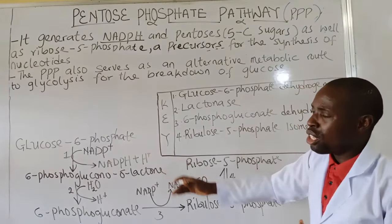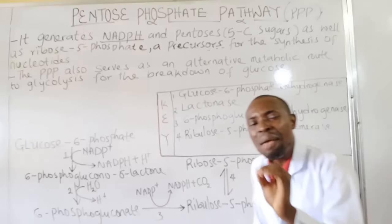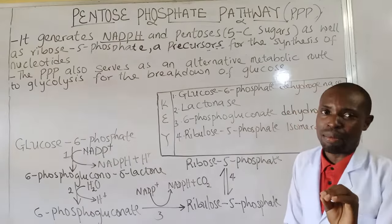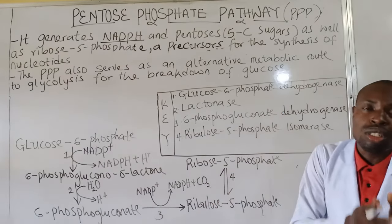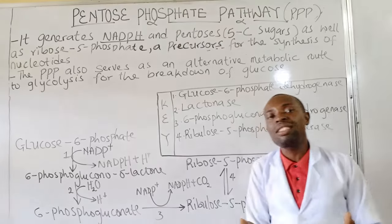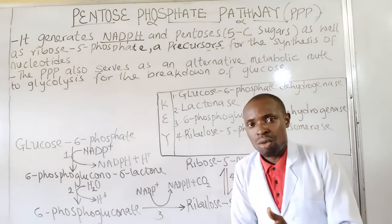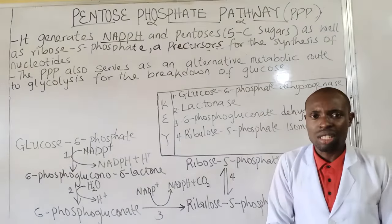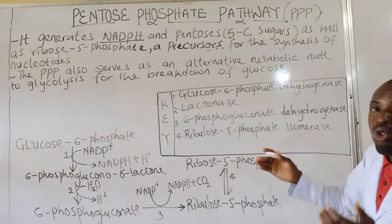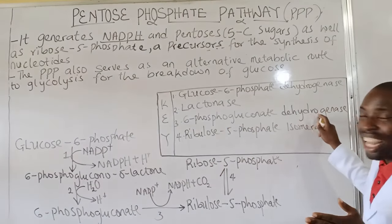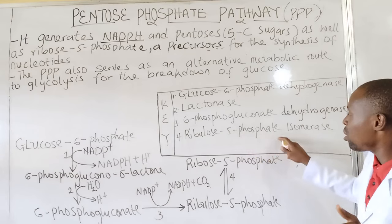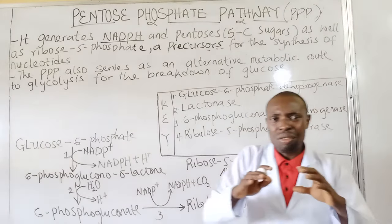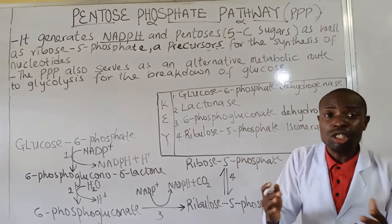In this oxidative phase, four steps are involved and these four steps are catalyzed by four major enzymes. The first one is glucose-6-phosphate dehydrogenase. Number two is lactonase, which can also be called 6-phosphogluconolactonase. Number three is 6-phosphogluconate dehydrogenase. Number four is ribulose-5-phosphate isomerase. This pathway is critical in the generation of two reduced NADPH for the oxidative phase.